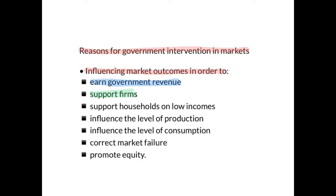Governments may interfere in order to raise the price or protect the income of firms or producers. Sometimes governments interfere in order to support households on low incomes — if a product is a necessity and it's too expensive, the government can interfere in the market by subsidizing the product or setting a price ceiling. Sometimes governments interfere to influence the level of production, for example if a harmful product is being overproduced.